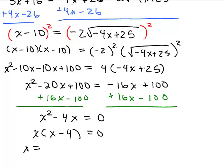So we have X equals 0 or X minus 4 equals 0, which means X equals 4. So my two solutions look to be 0 and 4.